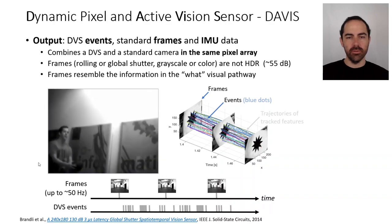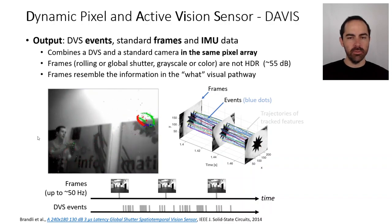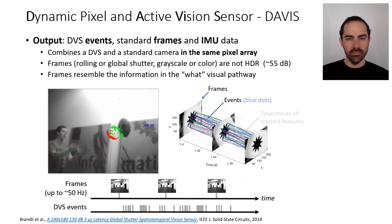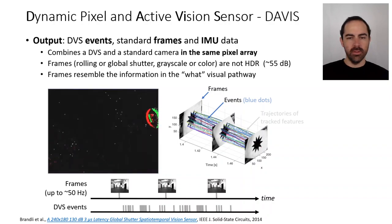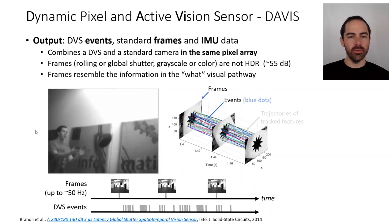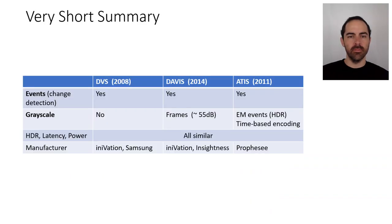Let's visualize the output of the DAVIS. These are the grayscale frames at an artificially low rate, and we see red and green dots which are the events. The frames are synchronous and could be lagging behind, whereas the events provide a much more continuous representation of the motion in the scene.